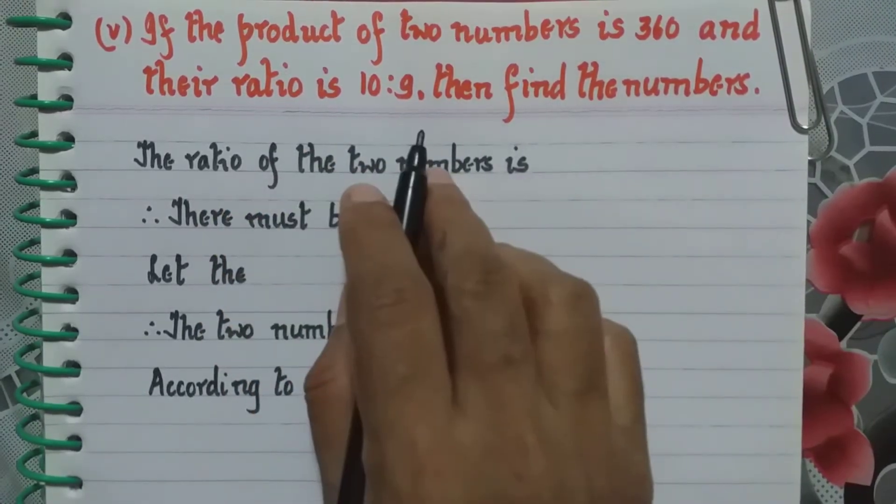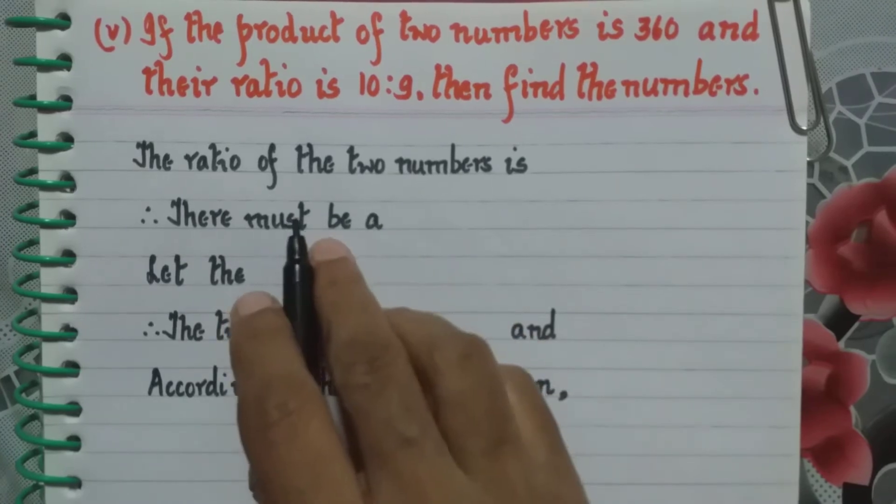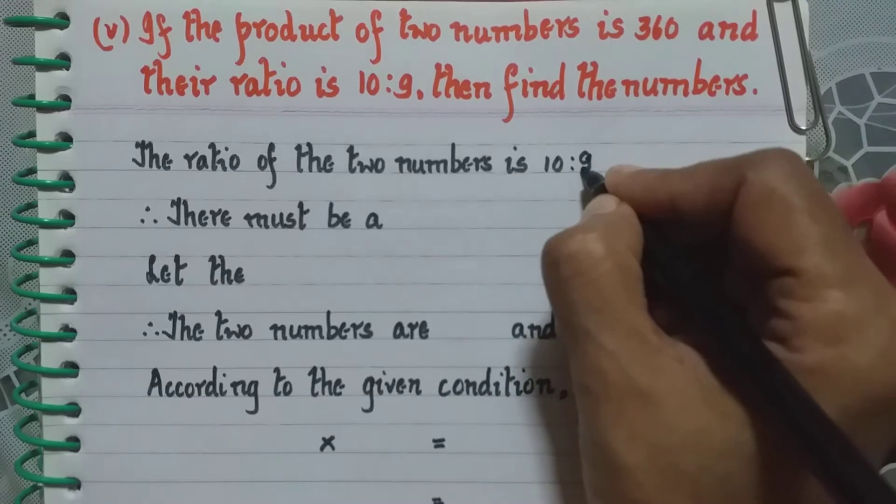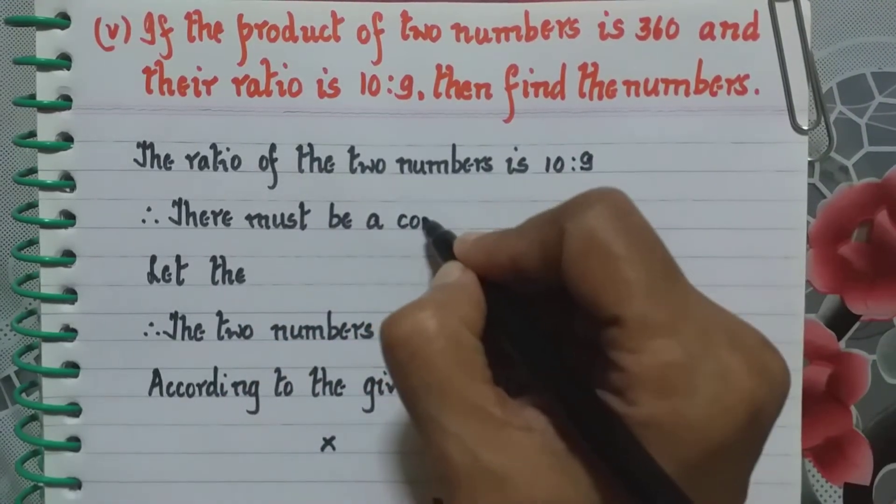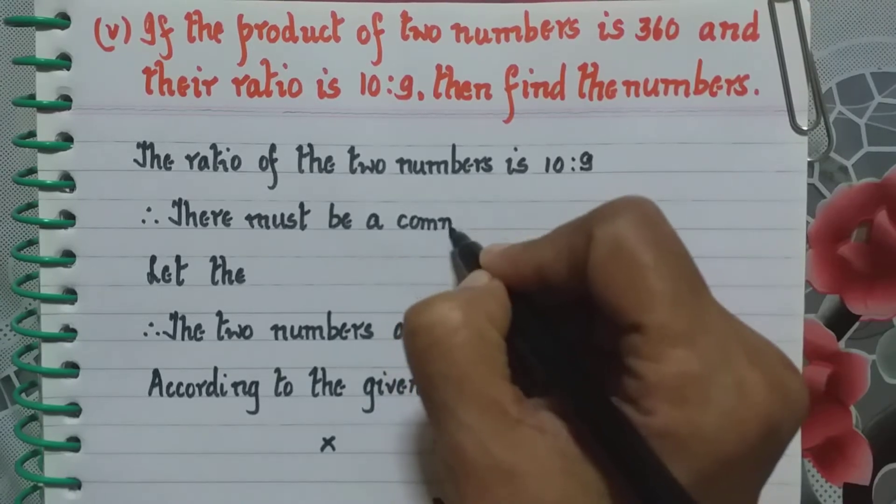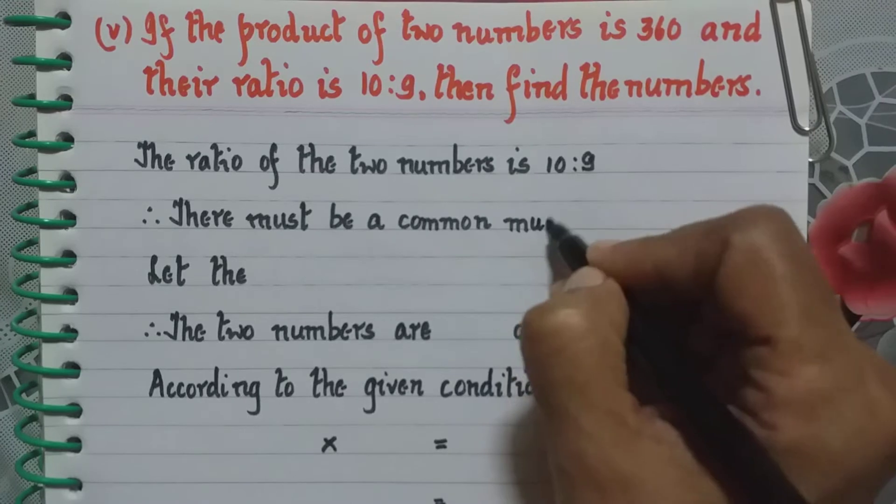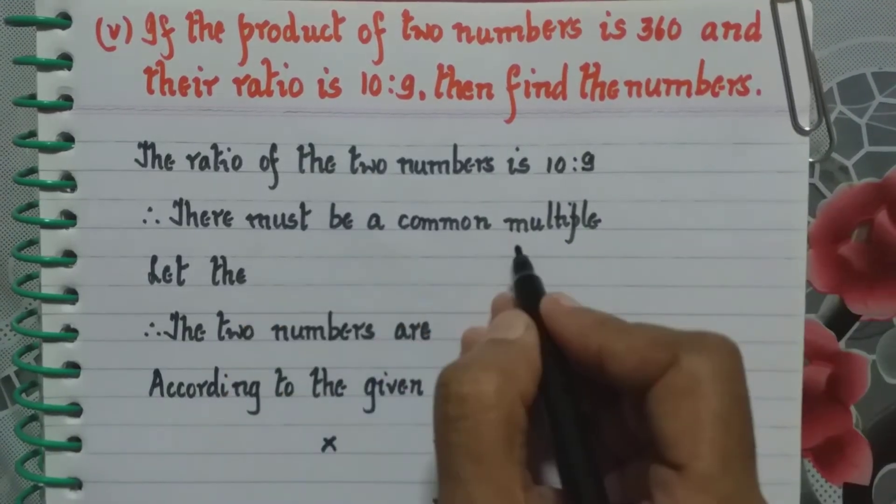So the ratio of the numbers is given as 10 is to 9. Let us write the first statement. The ratio of the two numbers is 10 is to 9, therefore there must be a common multiple. So now let us go back and we will take the common multiple which is a variable as x.